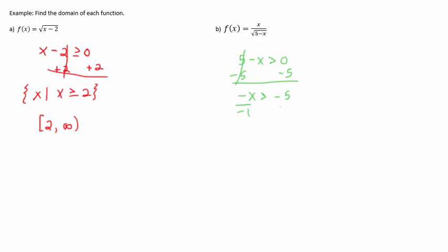To get rid of the negative I need to divide or multiply by negative one, which causes my inequality to switch directions. So anything less than five will work to give us values for this function.